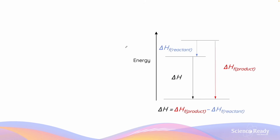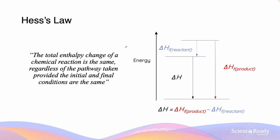Hess's law states that the total enthalpy change of a chemical reaction is the same regardless of the pathway taken, provided the initial and final conditions are the same. This illustrates what was demonstrated previously in our energy cycle diagram, and the same conclusion is reached by the enthalpy change formula we looked at earlier.